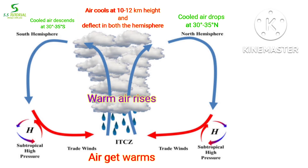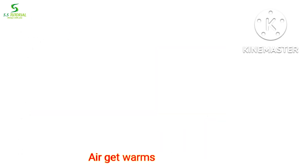Air gets piled up, and this results in high pressure. Calm conditions with feeble and variable winds are found here. These pressure belts are called subtropical high pressure belts.